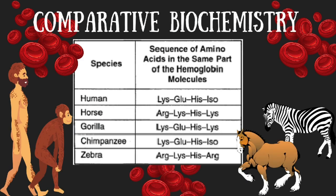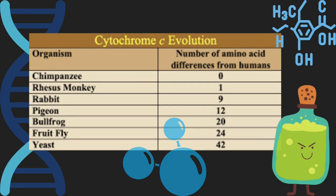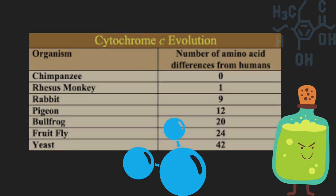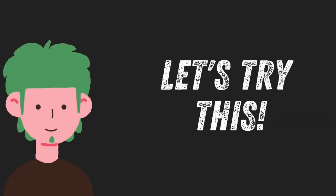Evidence from molecular biology: amino acid sequences of certain species can be used to determine how closely related different species are. If the amino acid sequences for a certain protein are very similar in two species, one can assume that those two species had a common ancestor. All 104 amino acids in the protein cytochrome C are identical in humans and chimpanzees. Observe the chart which shows how many of the amino acids in cytochrome C in other animals differ from those in humans and chimpanzees.